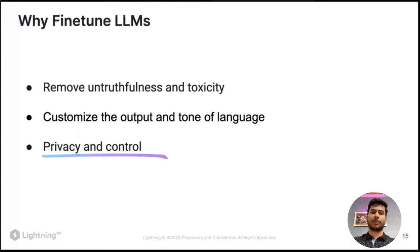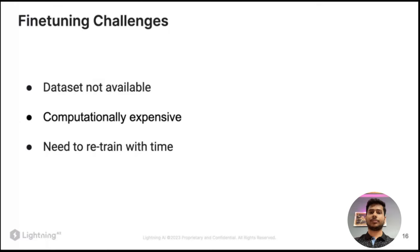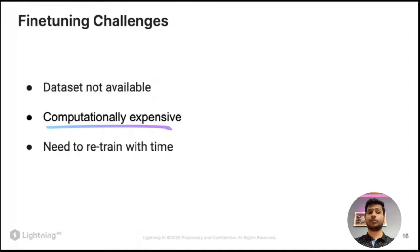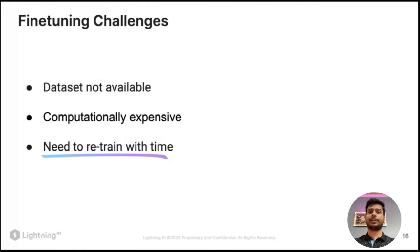It's also really good for privacy. At some companies it's not even allowed to send data outside their premises, so you can get a model on-premise, deploy it, and your data will be safe. However, fine-tuning LLMs has challenges: the dataset might not be available, it is computationally expensive, you might need to retrain over time as the model gets outdated, and with an online provider like OpenAI, they are responsible for training and updating the model.